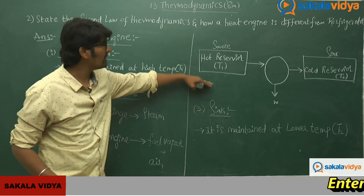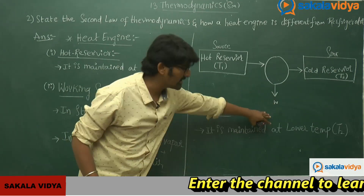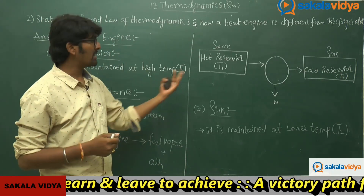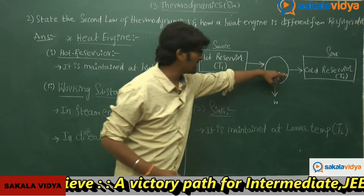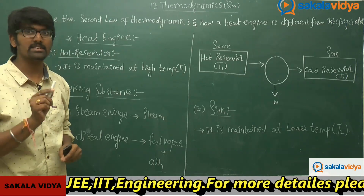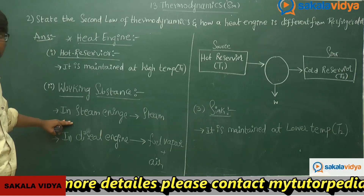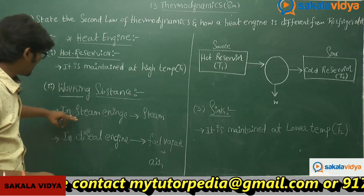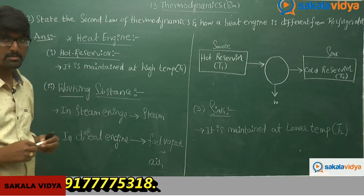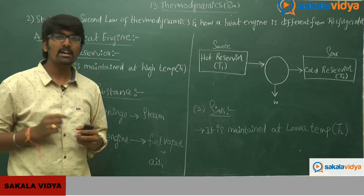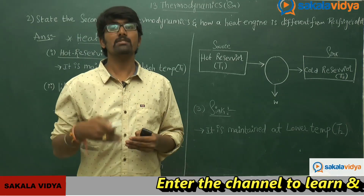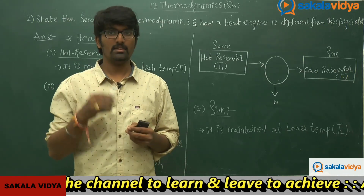In the diagram of a heat engine: the hot reservoir at temperature T1 is the source on the left side, the working body is in the middle where work is done, and the cold reservoir (sink) is on the right side. The source is maintained at higher temperature. The working substance in a steam engine is steam, while in a diesel engine it is fuel vapor plus air. The sink is maintained at lower temperature.